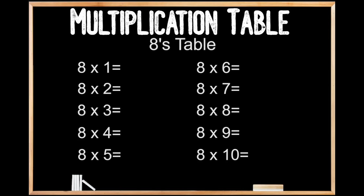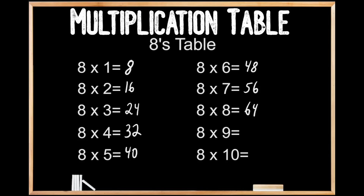8's table. 8 times 1 is 8. 8 times 2 is 16. 8 times 3 is 24. 8 times 4 is 32. 8 times 5 is 40. 8 times 6 is 48. 8 times 7 is 56. 8 times 8 is 64. 8 times 9 is 72. And 8 times 10 is 80.